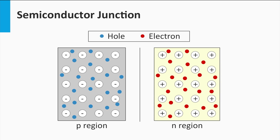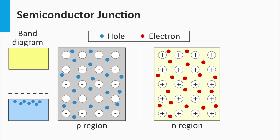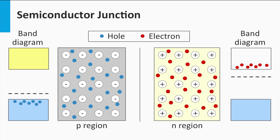On the left we see a p-type semiconductor material. The electronic band diagram of the p-layer is illustrated on the left as well. I would like to address again that for the p-type silicon the Fermi level, indicated by the dashed black line, is closer to the valence band than to the conduction band. On the right we see the n-type semiconductor material. Its corresponding electronic band diagram is illustrated on the right. The Fermi level is closer to the conduction band for the n-type material.